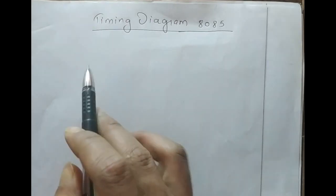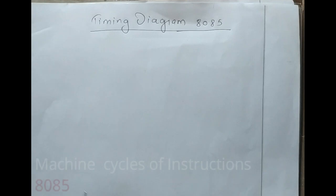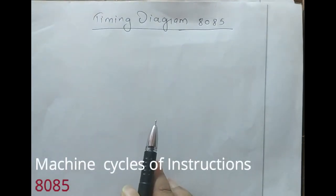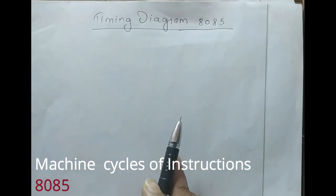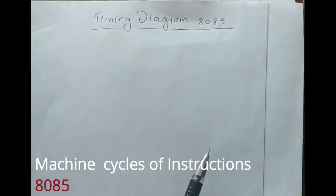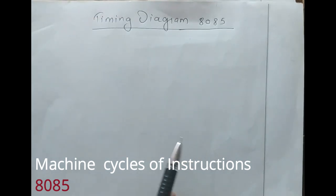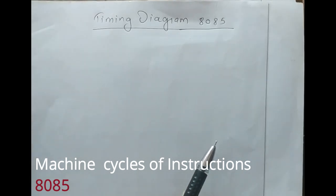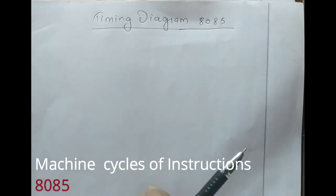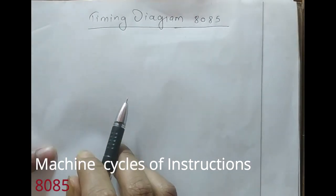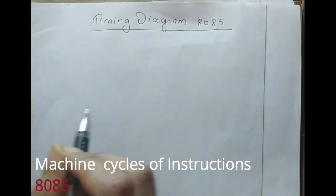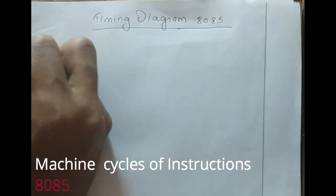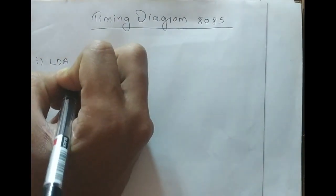Hello all. In this series on learning timing diagrams of the 8085 instruction set, we have already learned how to draw the timing diagram for each machine cycle, and we have drawn the timing diagram for the LXI instruction. Today I would like to describe the different machine cycles of different instructions, so you can recognize the machine cycle in each timing diagram. Let's start with LDA 2000H.